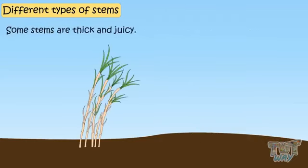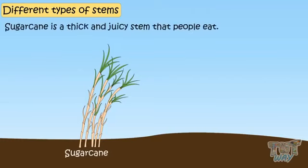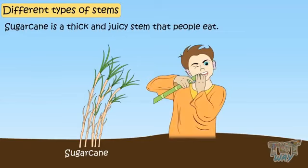Some stems are thick and juicy. For example, sugar cane is a thick and juicy stem that people eat.